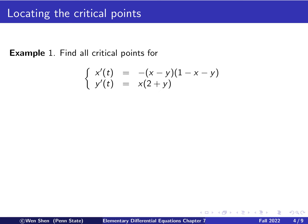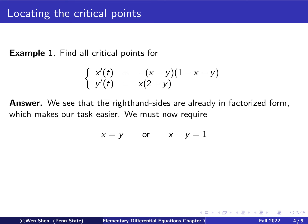The first example has x' equal to a function of x and y, but not t, and y' equal to another function. We need to find where both right-hand sides equal zero simultaneously. In this example, the right-hand sides are already in factorized form. For the first equation, function F equals zero gives two possibilities: either the first factor is zero, giving x equal y, or the second factor is zero, giving x plus y equal one.